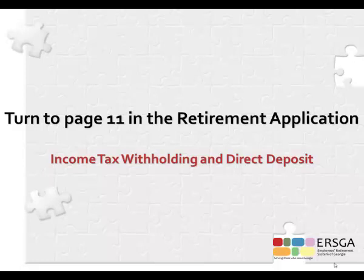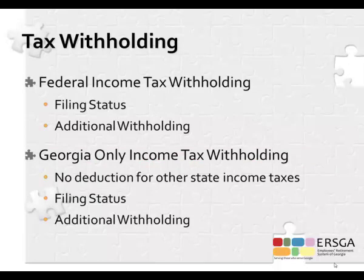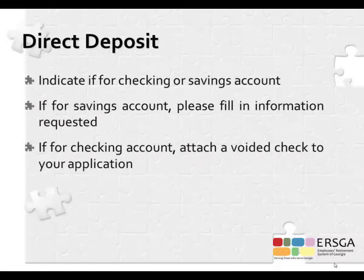Turn to page 11 in your retirement application. This page is for designating tax withholding, direct deposit, and other retirement check deductions. The top half covers federal and state income tax withholding. Note that PSERS only deducts state taxes for Georgia — if you move out of state, update your state tax withholding. Towards the bottom, you'll provide direct deposit information. Attach a voided personal check for a checking account, or complete the savings account information section for a savings account.